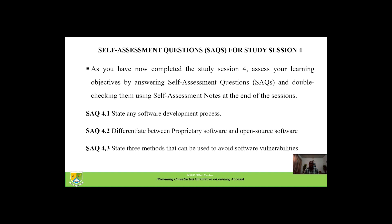Self-assessment questions for study session four: SAQ 4.1 — State any software development process. SAQ 4.2 — Differentiate between proprietary software and open source software. SAQ 4.3 — State three methods that can be used to avoid software vulnerabilities. Thank you and see you in the next study session.